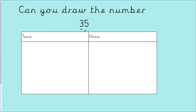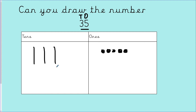Let's look at the next number — thirty-five. Tens and ones. Please pause the video here and have a go on your whiteboards. Let's have a look together. How many ones? Five ones. I'll draw five ones: one, two, three, four, five. How many tens? Three tens. Ten, twenty, thirty. Excellent, well done.